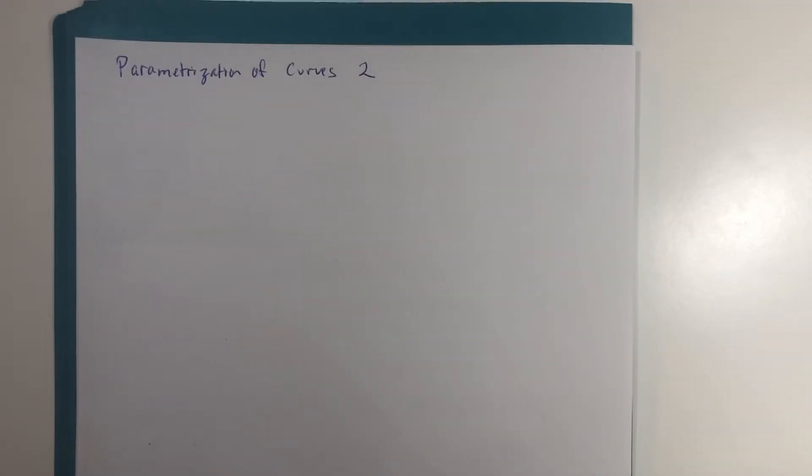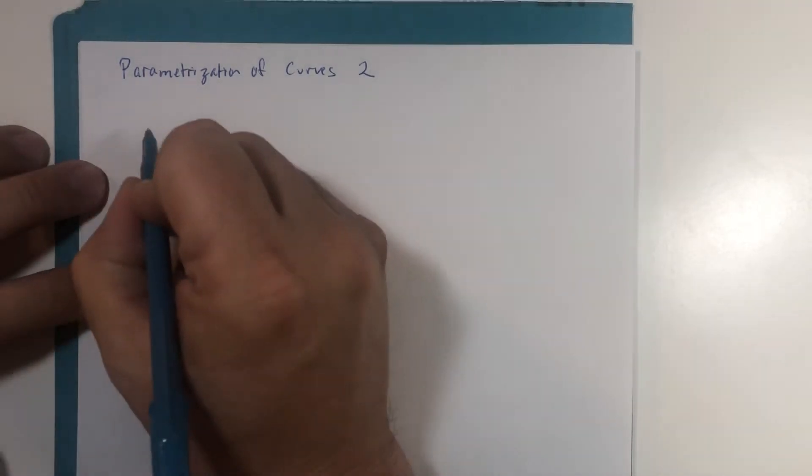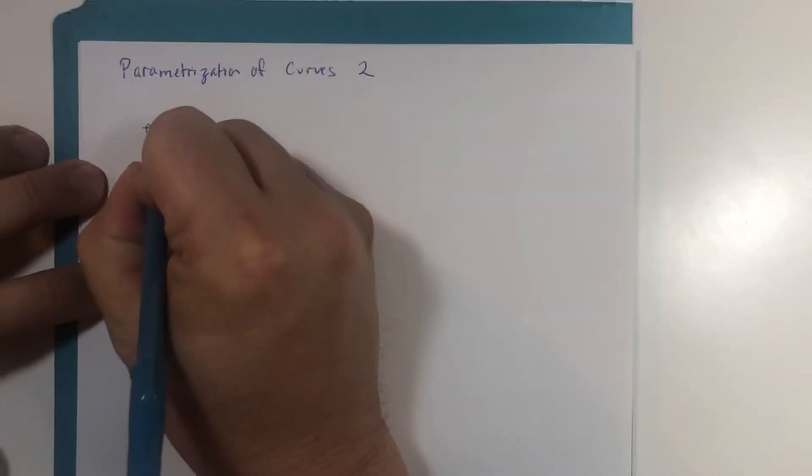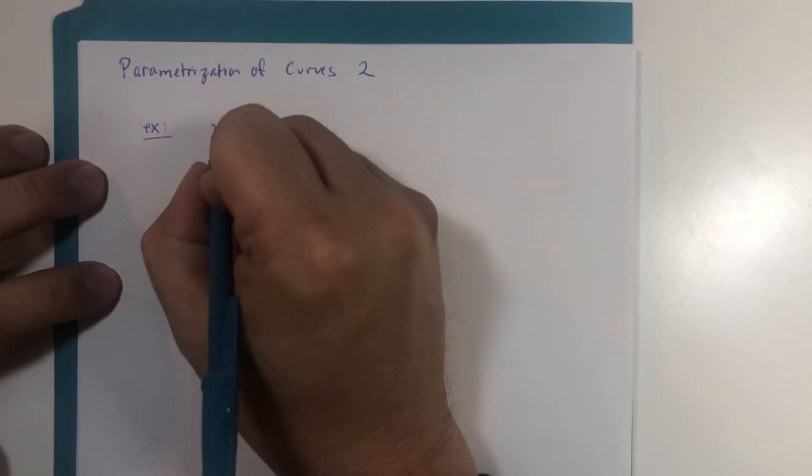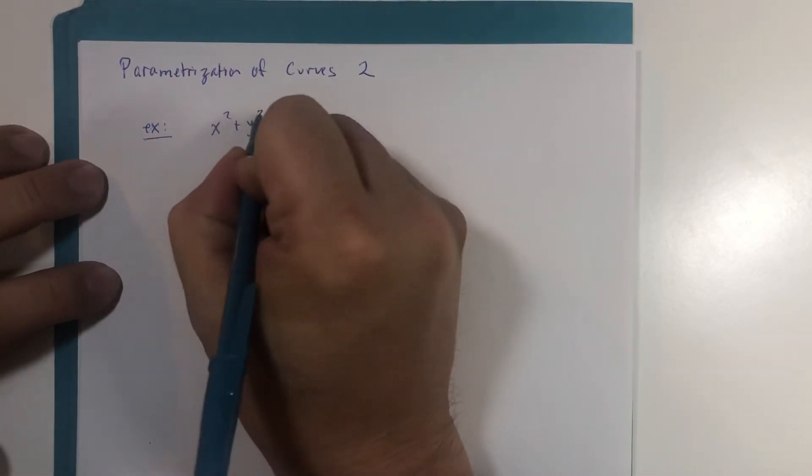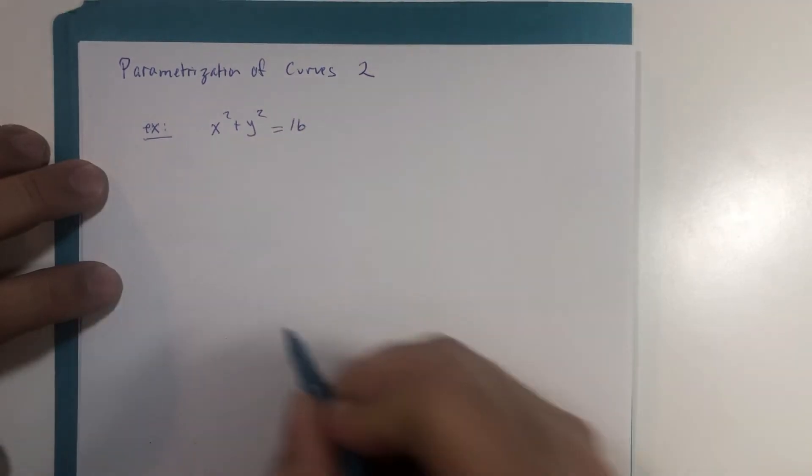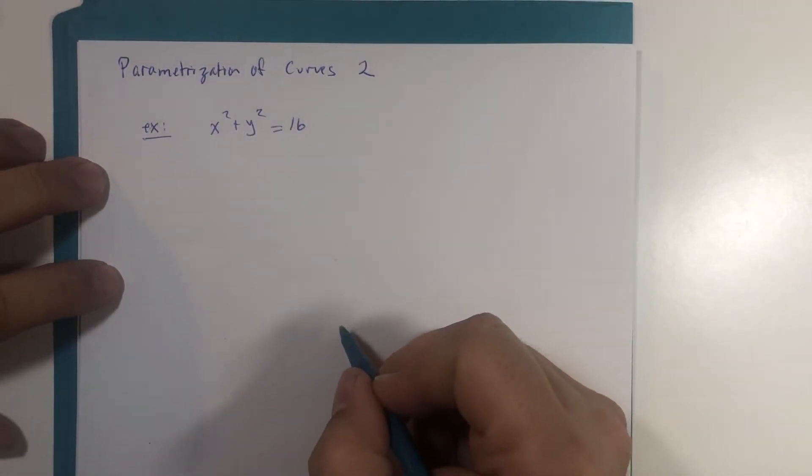Another example of writing the vector or parametric version of a curve, this is one that we have seen before, at least in one form and that's the preferred form. So we're going to convert this rectangular x squared plus y squared is 16 which we all know is a circle.